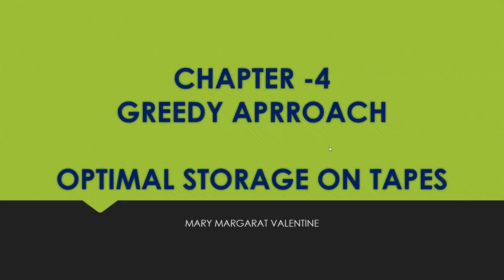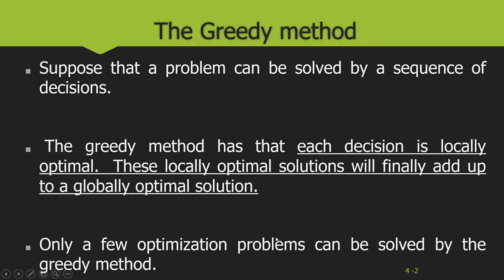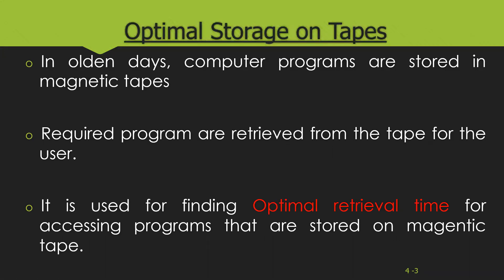Let us start with optimal storage on tapes, which is a greedy method from the fourth module. To revise: using the greedy method we find feasible solutions, then based on minimization or maximization we find the optimal solution. The greedy method involves a sequence of decisions where each decision is locally optimal, and these locally optimal solutions add up to a globally optimal solution.